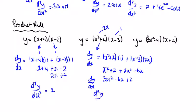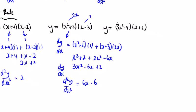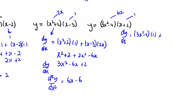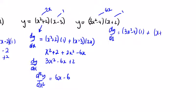So the second derivative is equal to 6x minus 6. And for the next product rule example: dy dx is equal to the first by the second differentiated, plus the second by the first differentiated, so we're going to get 3x squared minus 4 plus 6x squared plus 12x, which is 9x squared plus 12x minus 4.